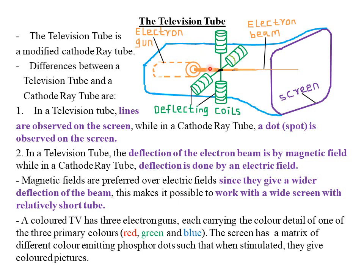For a cathode ray tube, the X plates are connected to an electric circuit so that one plate is positive and the other negative, creating an electric field responsible for horizontal deflection. Similarly, the Y plates are connected to an external circuit with one plate positive and one negative, creating an electric field for vertical deflection. For the television tube, a north and south pole arrangement creates a magnetic field that deflects the electron beam horizontally and vertically.